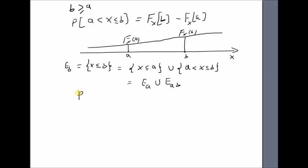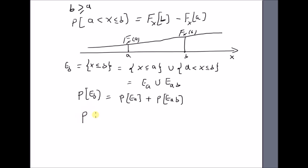So the probability of event E_b is equal to the probability of event A plus the probability of the interval. And this probability of the interval is nothing but the left-hand side of the original proposition,